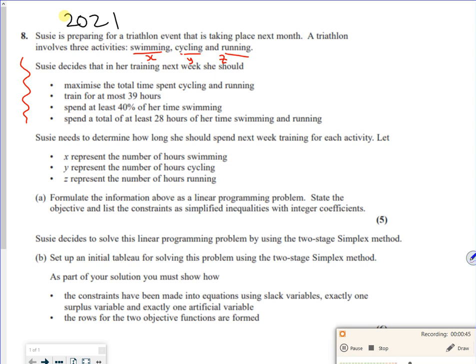It says formulate the information as a linear programming problem. State the objective and list the constraints as simplified inequalities with integer coefficients. A lot of papers are marked but they're not integers, so just make sure you get it as an integer.